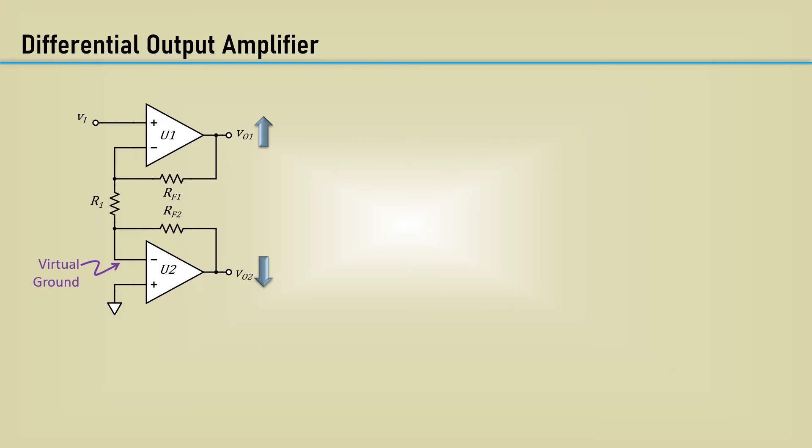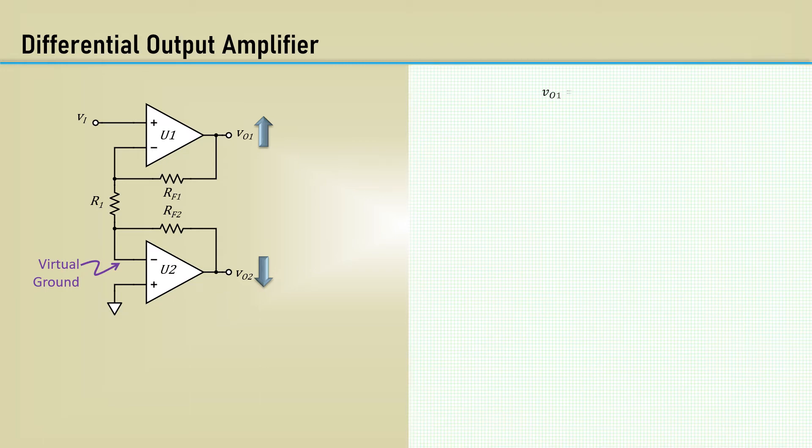Because the lower node of resistor R1 is at virtual ground, this equation can be used for VO1, simply the non-inverting output voltage equation. Because there is a virtual short between the inverting and non-inverting inputs to U1, the upper node of R1 sees the input voltage VI. This equation can be used for VO2, the inverting output voltage equation.